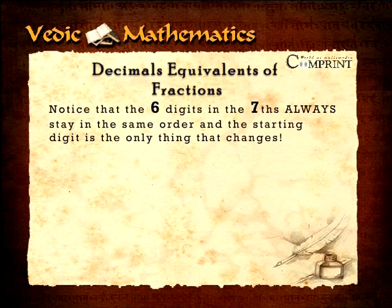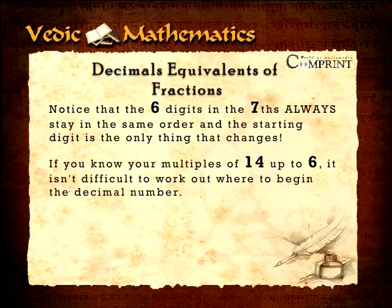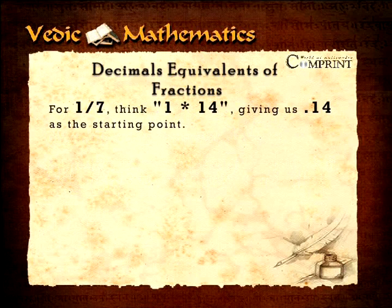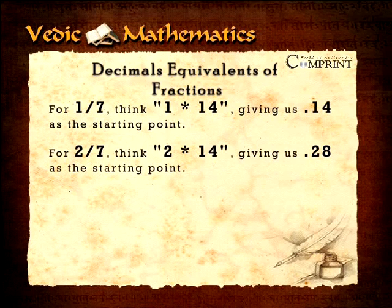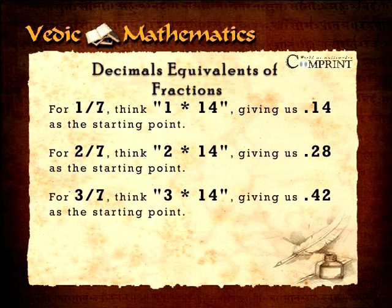Notice here that the six digits in the seventh always stay in the same order, and the starting digit is the only thing that keeps changing. If you know your multiples of fourteen up to six, it isn't difficult to work out where to begin the decimal number. For one by seven, think one multiplied by fourteen, giving us point one-four as the starting point. For two by seven, think two multiplied by fourteen, giving us point two-eight. And for three by seven, think three multiplied by fourteen, giving us point four-two as the starting point.